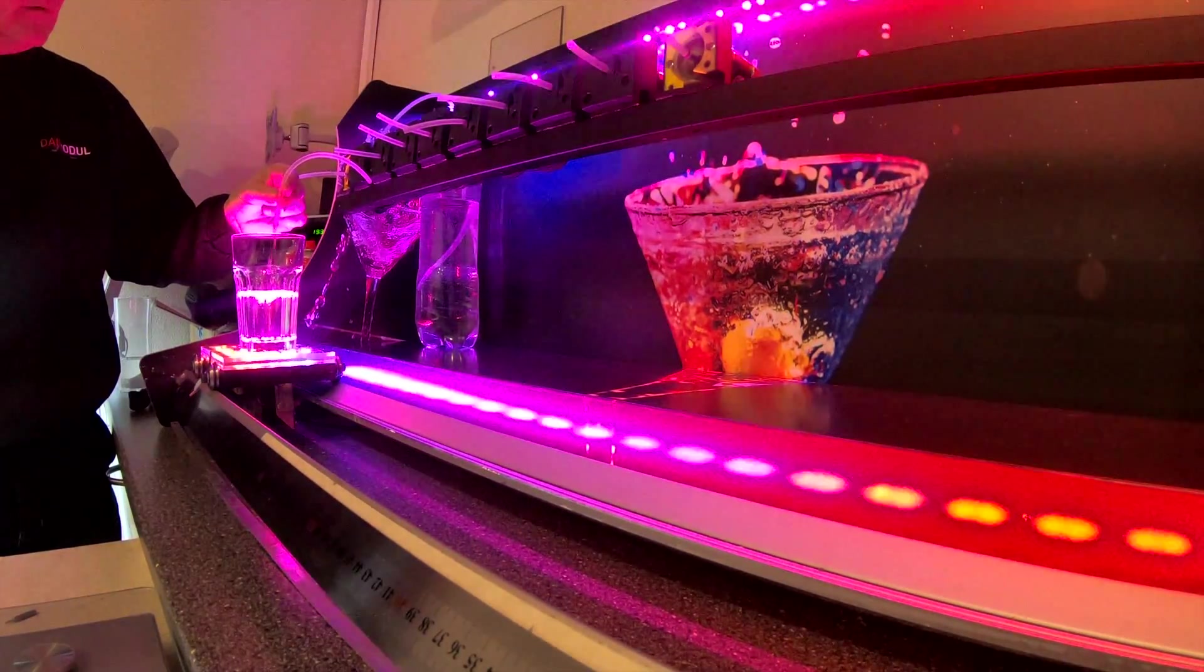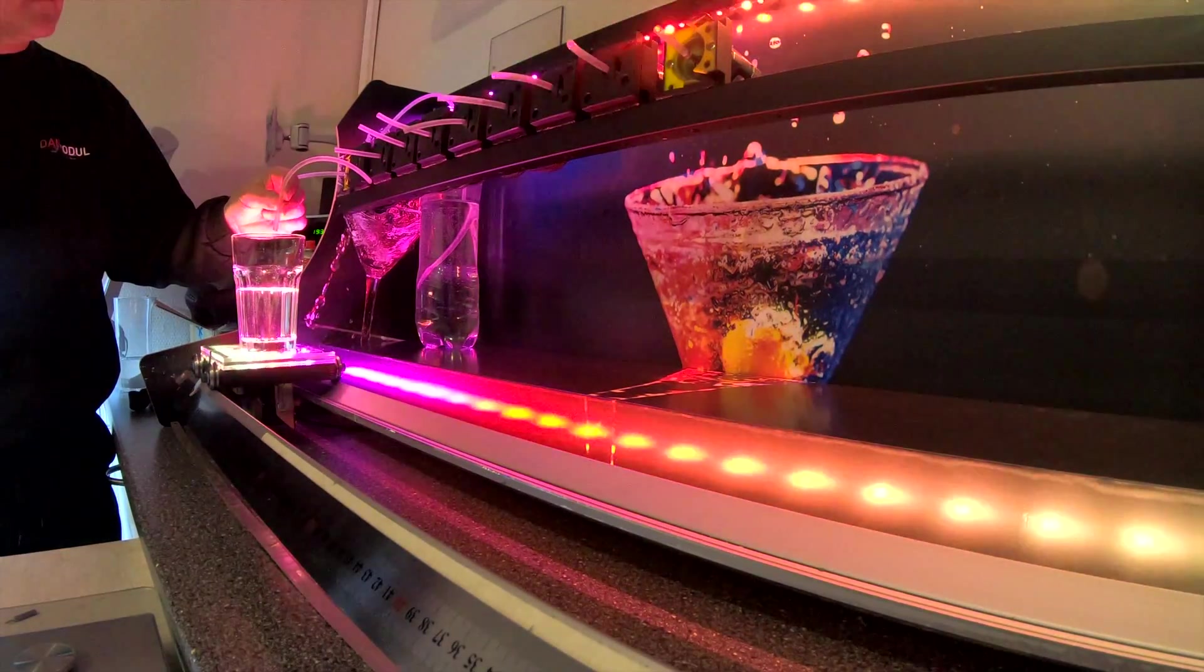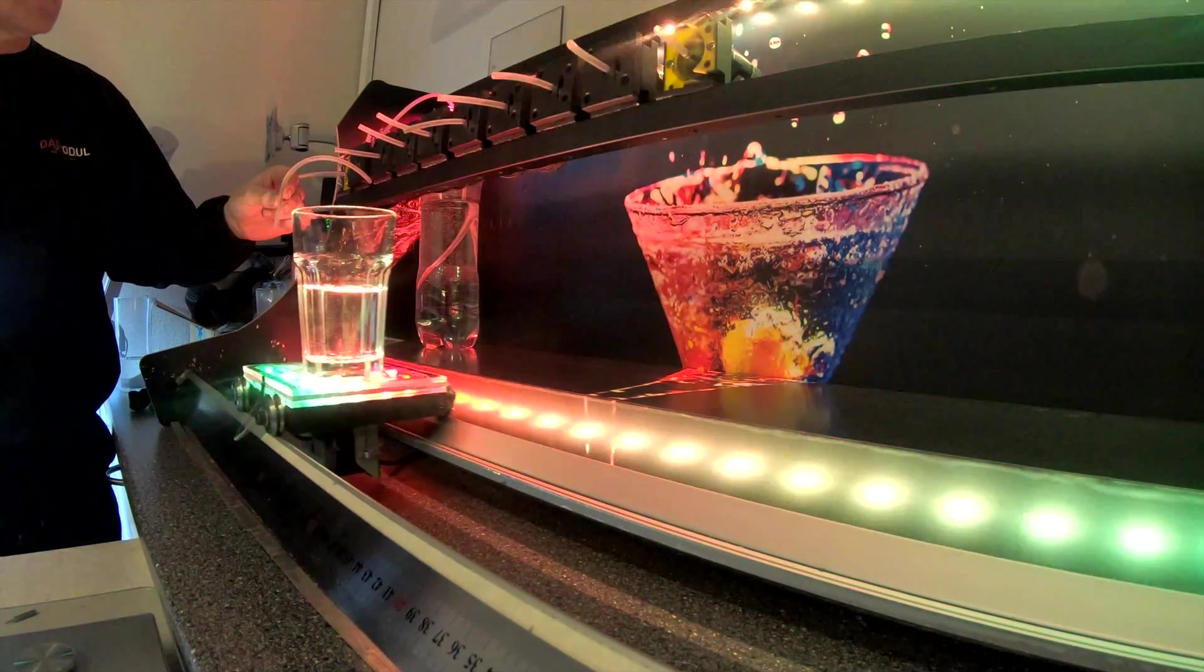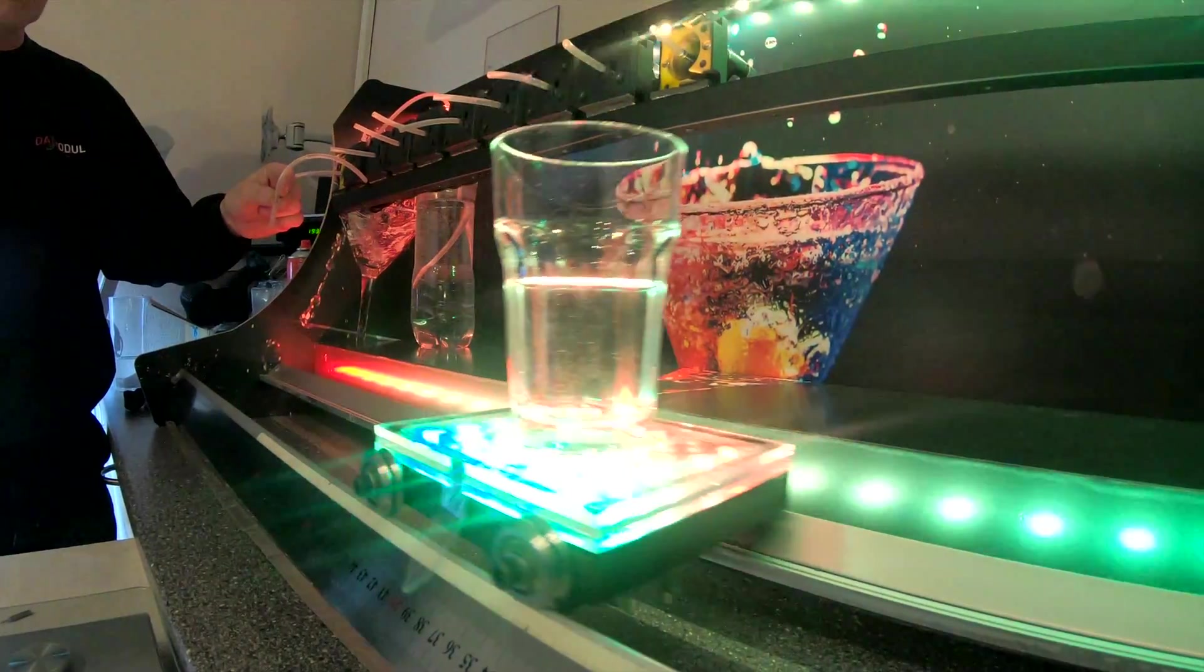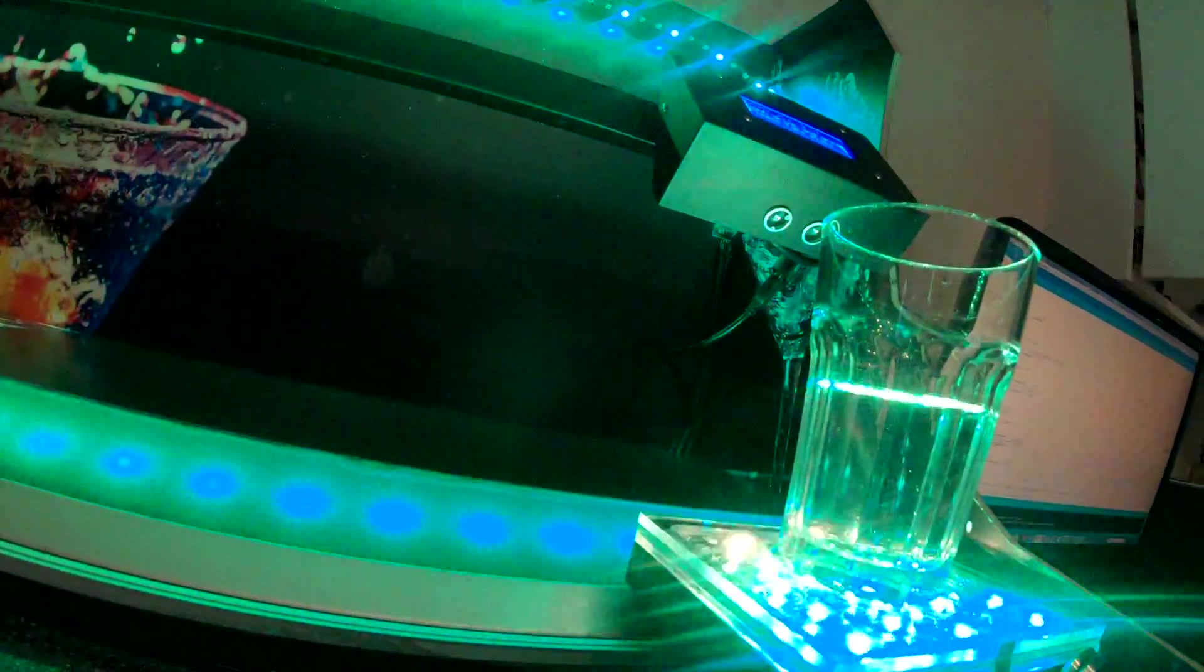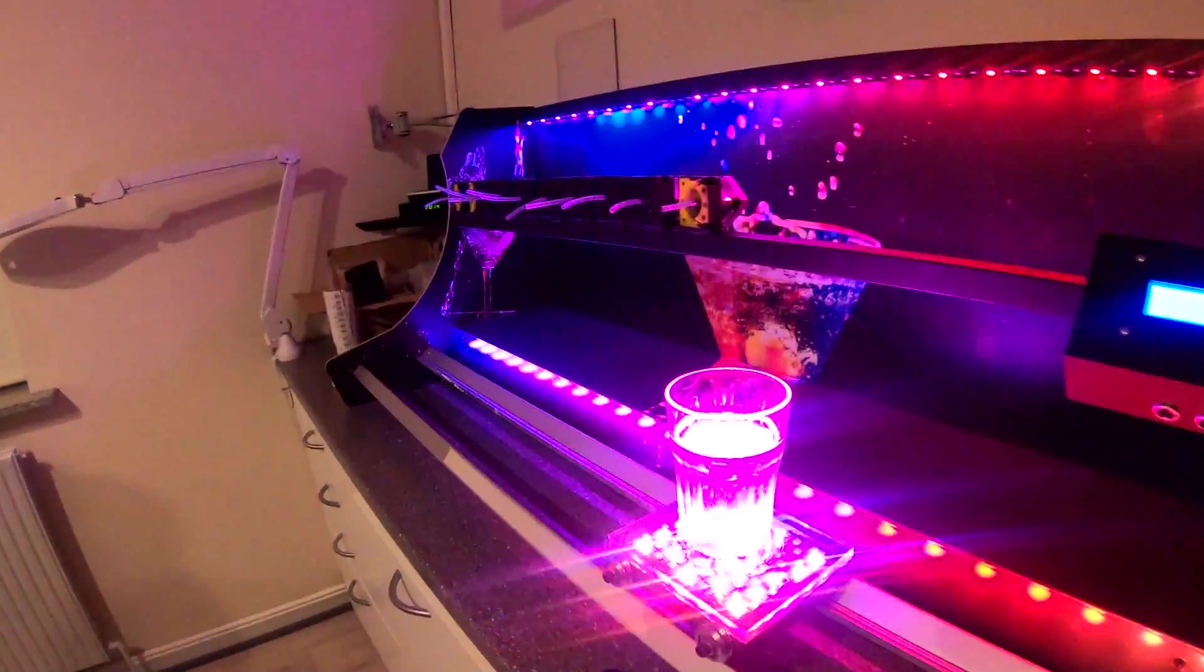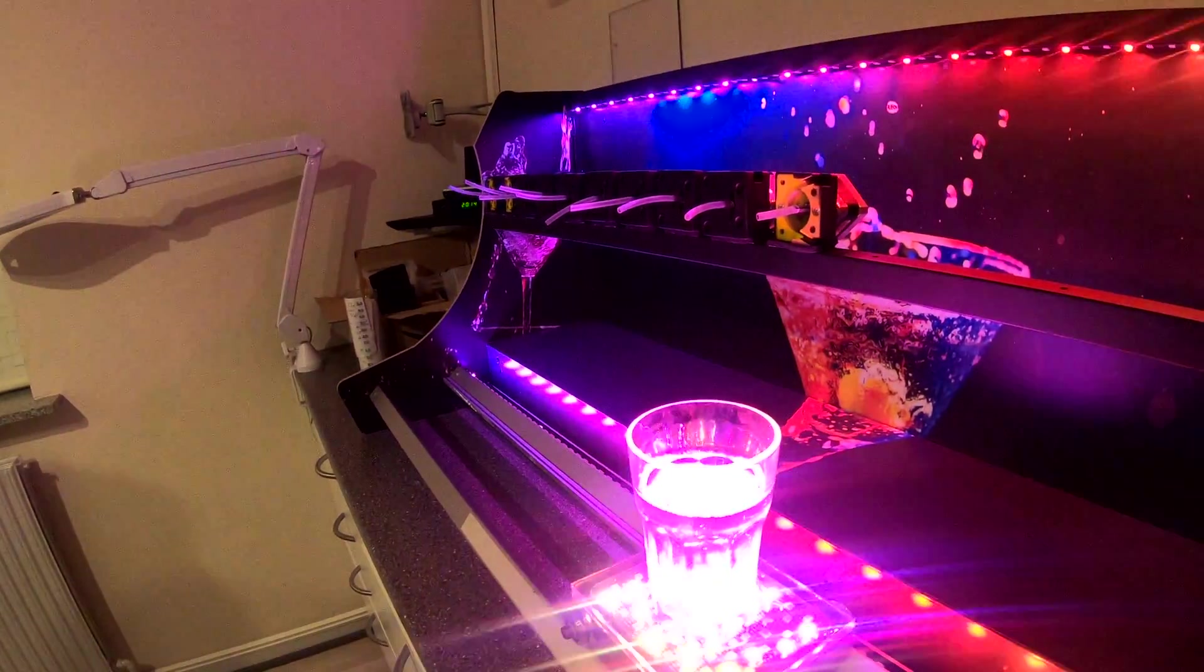Then we calibrated the sleigh in the code so it could be moved to a certain position defined in millimeters. See more of this in the code example in the description. After we were able to move the sleigh to a pump position, we calibrated the pumps so that they were able to dispense based on a defined amount of milliliters. Again this is shown in the code and you can read more about it on how to calibrate it there.